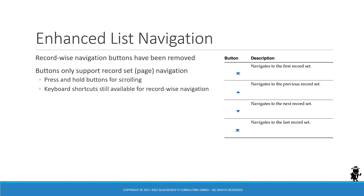In IP17 and higher, when you upgrade to anything higher than IP17 such as Siebel 22, the navigation buttons at the bottom of list applets have changed. The record-wise navigation buttons, used to move from one record to the next, have been removed. The only buttons remaining are a pair that navigates by record set and a pair that navigates to the first or last record set respectively. These record set navigation buttons can be pressed and held — holding the mouse button down will cause the applet to scroll continuously through record sets. Note that excessive scrolling can be taxing on the database and should be avoided.